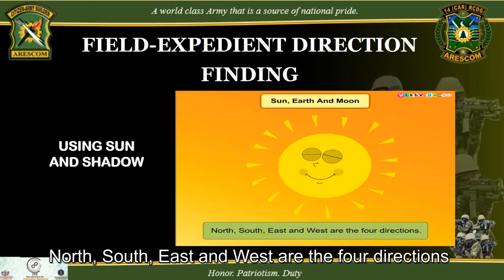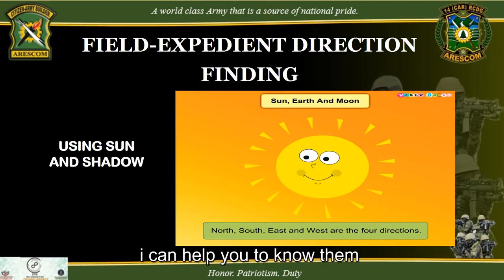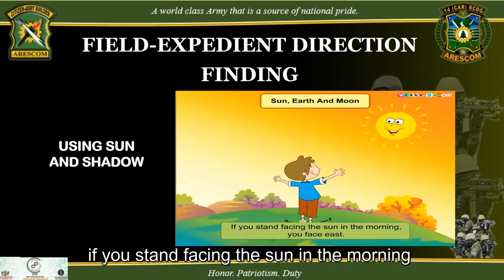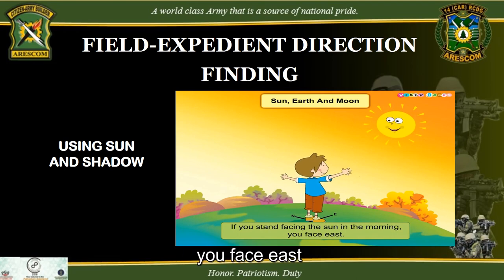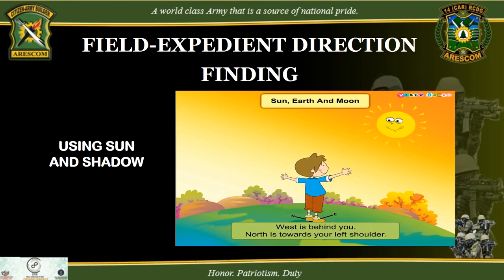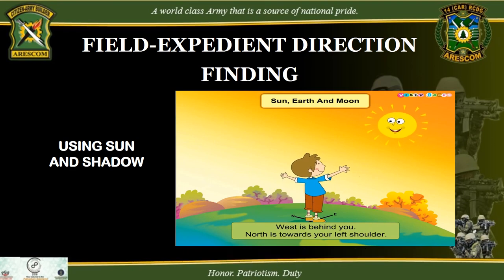North, South, East, and West are the four directions. If you stand facing the sun in the morning, you face East, so West is behind you. North is towards your left shoulder, and South is towards your right shoulder.